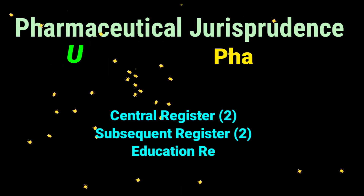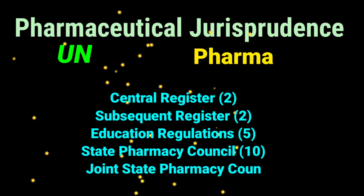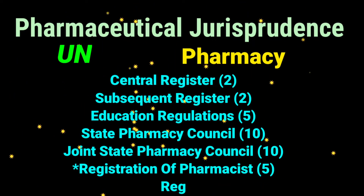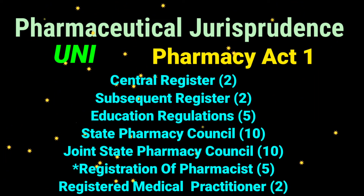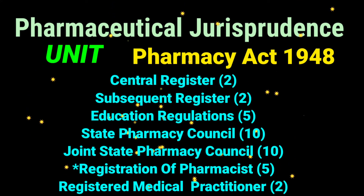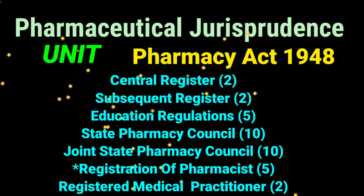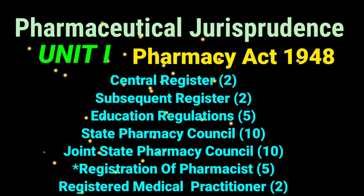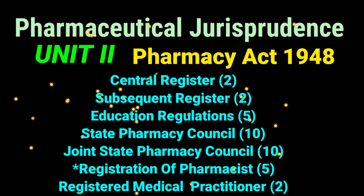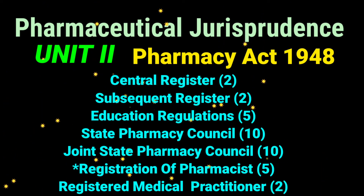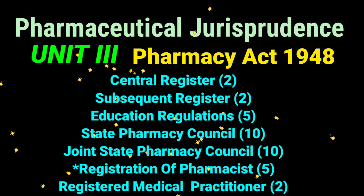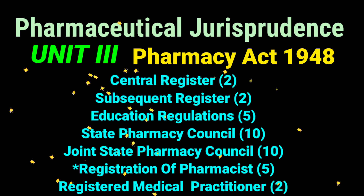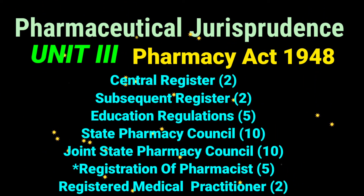Unit 3 begins with the Pharmacy Act 1948. Important topics include: the Central Register, definitions and the Supplementary Register, education regulations, State Pharmacy Council — its constitution, composition, and functions — Joint State Pharmacy Council — its constitution, composition, and functions — and registration of pharmacists in full detail, as well as registered medical practitioners.